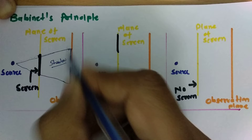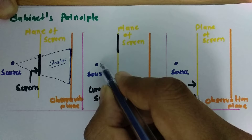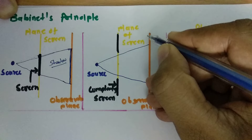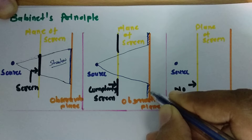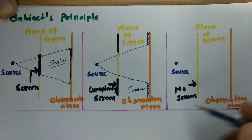Now if I take the complementary of this screen, when this source radiates light, it will fall on this screen like this, and one can see there will be a shadow over here as well. And when this source is radiating light where we don't have any screen — that is the no-screen case — there will be no shadow which forms on the observation plane.